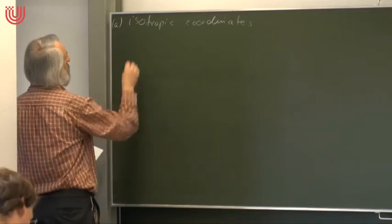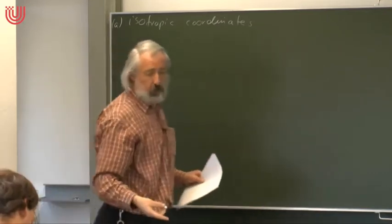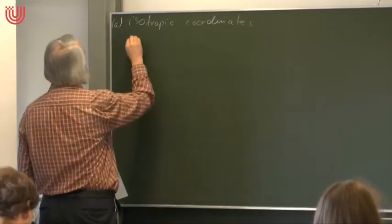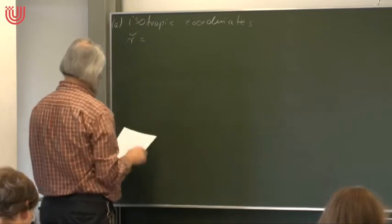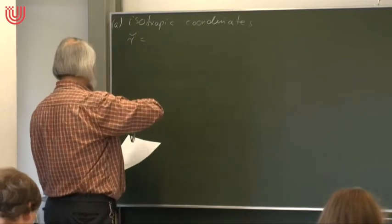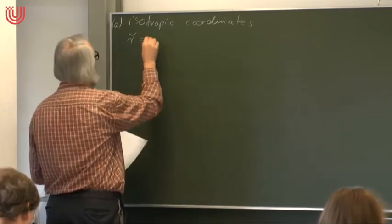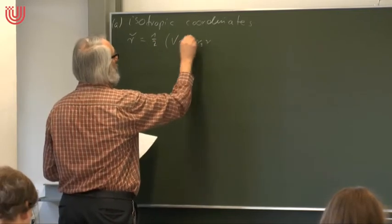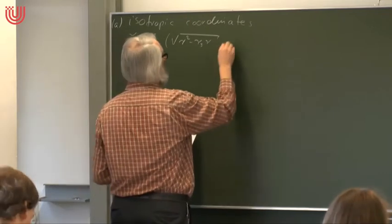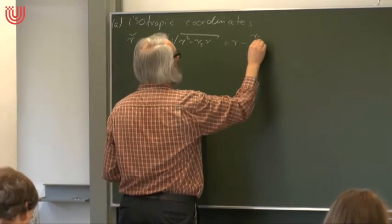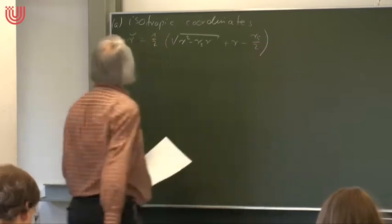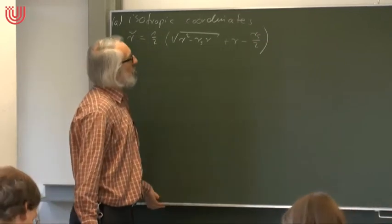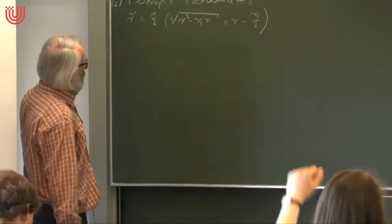The isotropic coordinates — this was a transformation of the radius coordinate alone. So t, theta, and phi remain unchanged. We introduced a new radial coordinate: one half times the square root of r squared minus rs·r, plus r minus rs over two. This can be easily solved for r, so it's a one-to-one transformation of the coordinate r into a new coordinate r-tilde.